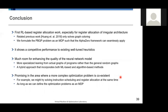And it has showed promising aspects in the area where a complex optimization problem is also coexistent. For example, you might try solving instruction scheduling and register allocation at the same time. And it has been known that they're entangled together and it's very complicated if you have to consider both problems at the same time. So as long as we can define the optimization problems as an MDP, as we did in this talk, we can challenge the problems using the same architecture and approach.